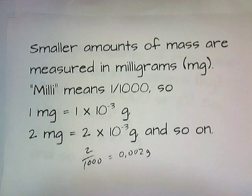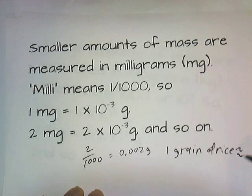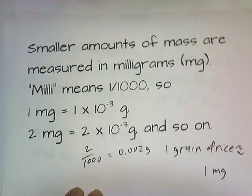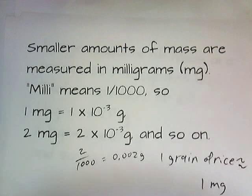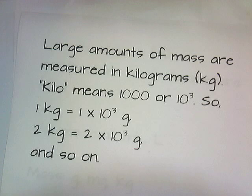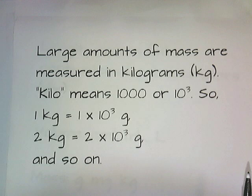One grain of rice is about one milligram. So if you have ten grains of rice, you have ten milligrams. Pills are often measured in milligrams. Aspirin tablets are supposed to have about 395 milligrams of aspirin in them.